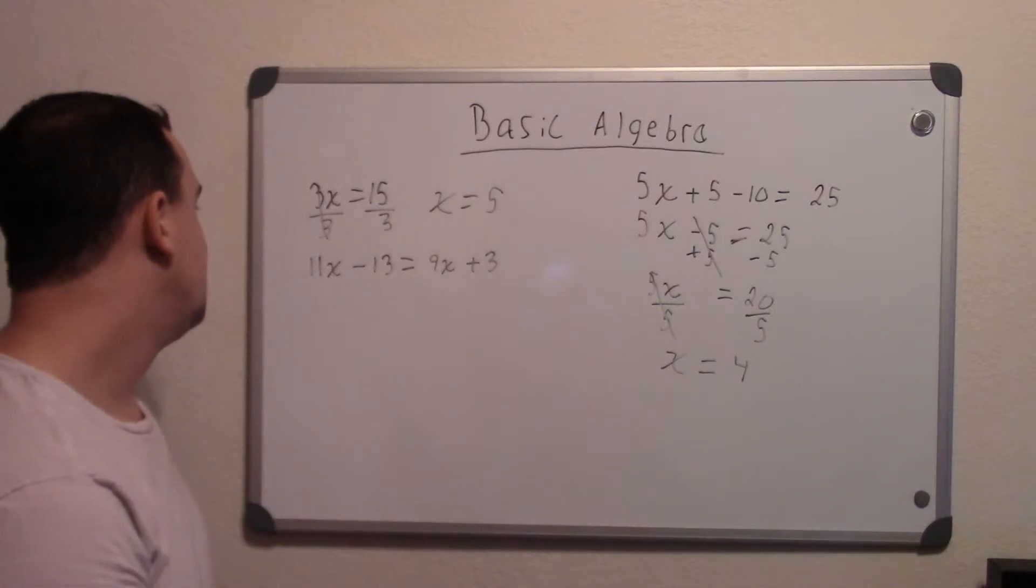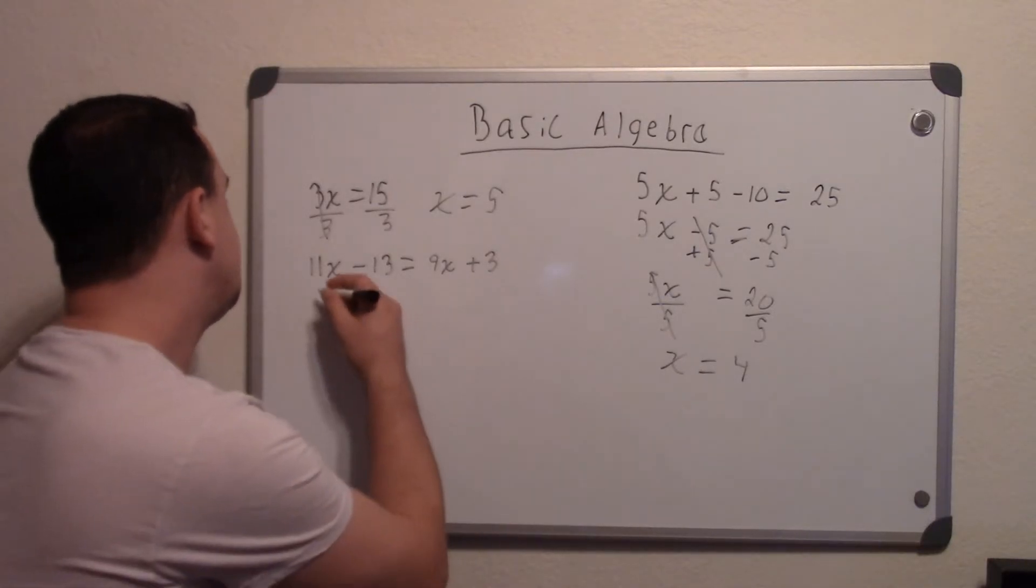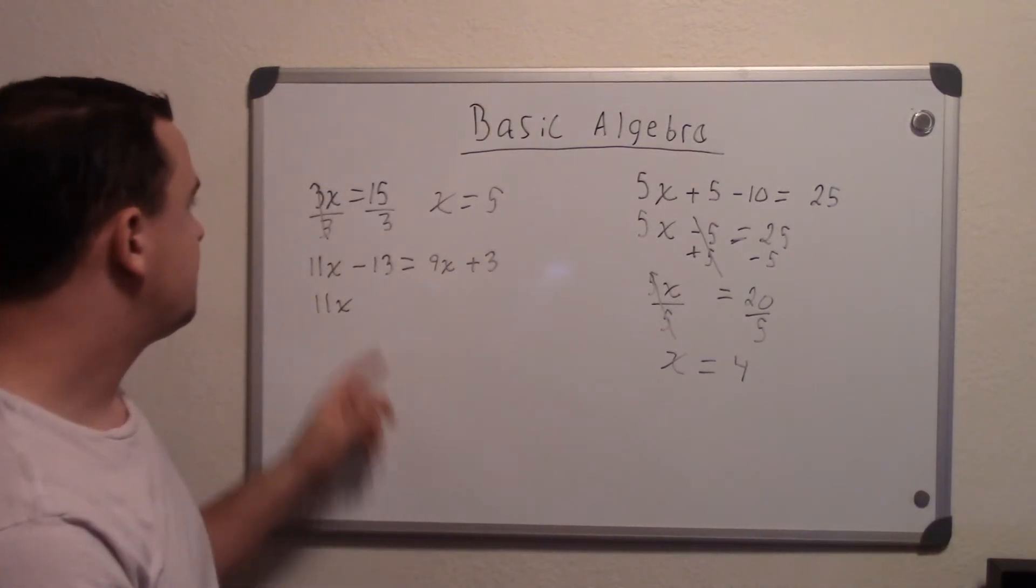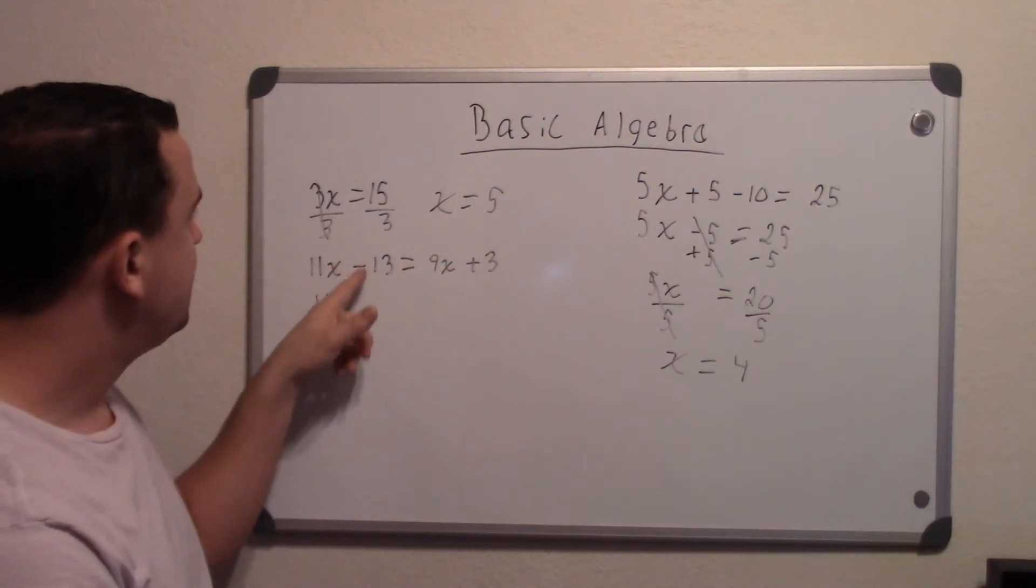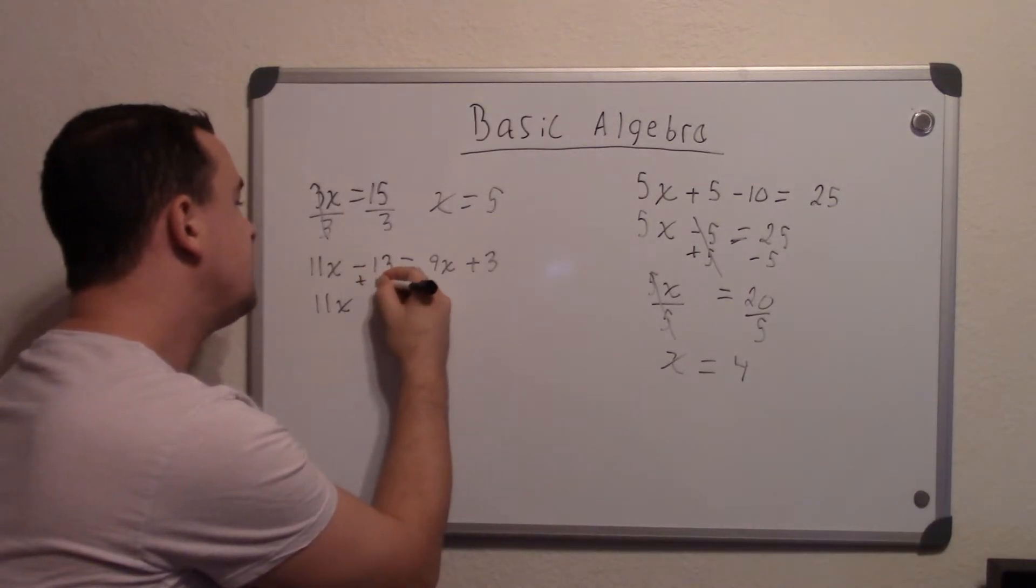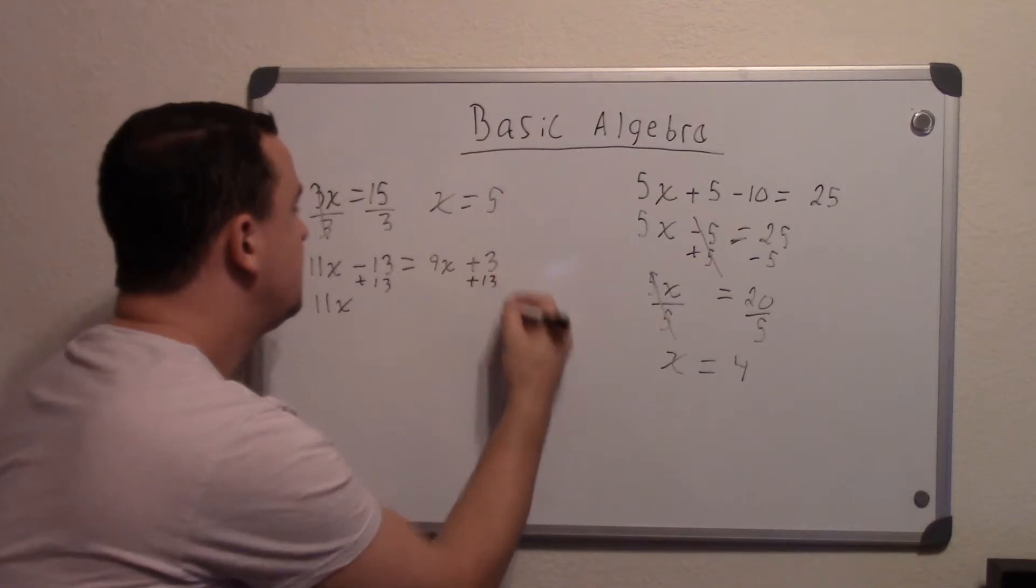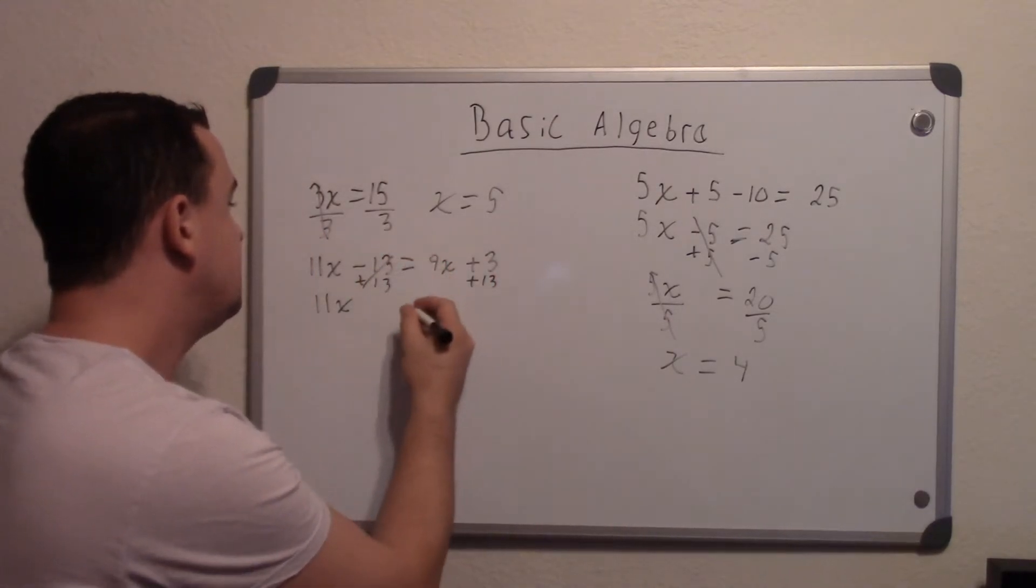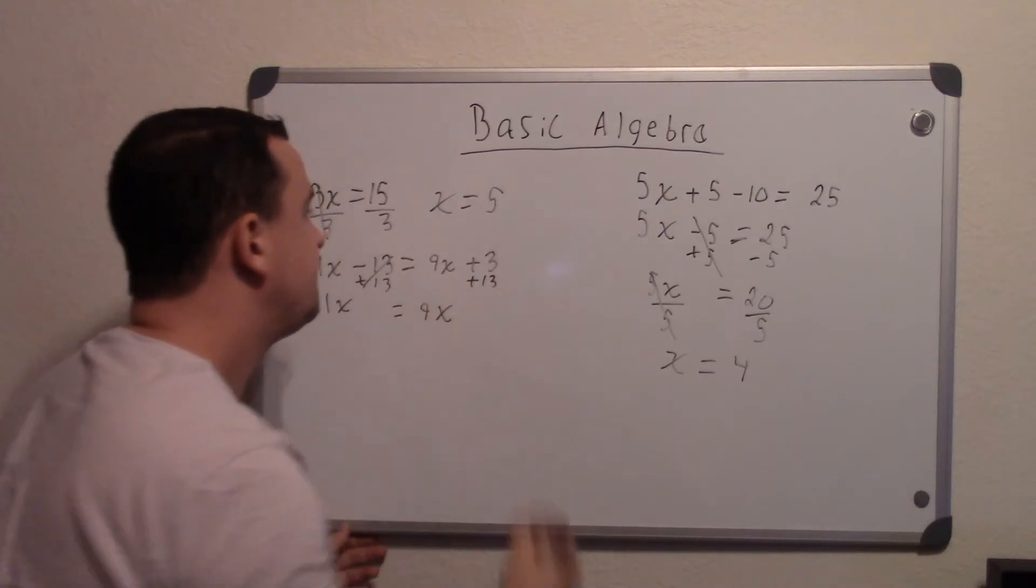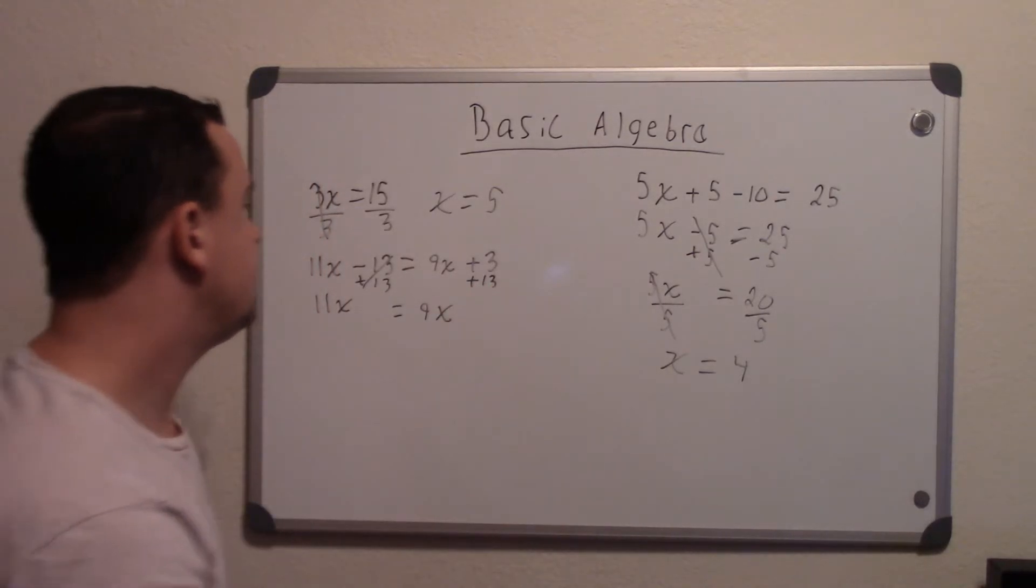So first I'll work with the whole numbers. So I'll bring down the 11x. I won't do anything to that. I'm going to get the whole numbers on that side. So this one's subtracting 13. So I'm going to add 13 to both sides. And that cancels out. And now that equals 9x. And we get 13 and 3 is 16.